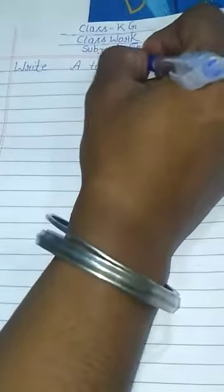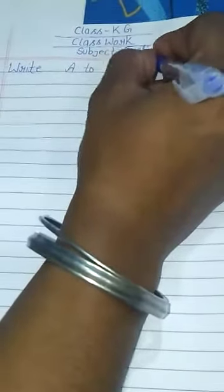So let's read it. Write, write means write A to J, S, P, E, double L, I, N, G, S. Write A to J spellings.